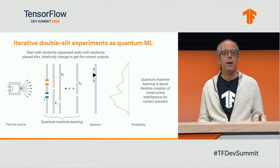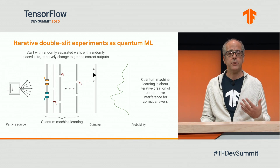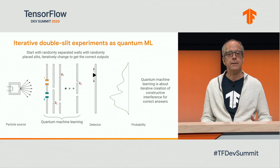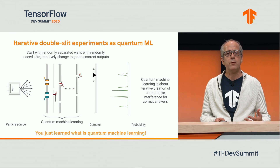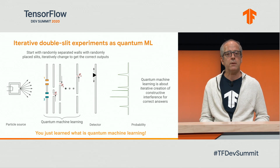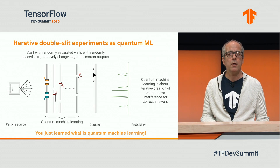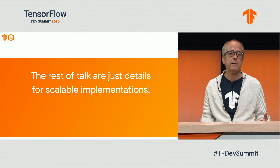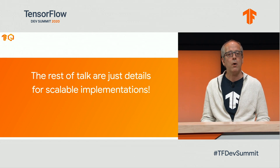We parameterize this arrangement, attributing parameters to each slit location, and iteratively learn to generate a desired output probability distribution or a set of solutions to a computational problem — that's the heart of quantum machine learning. This particular setting is not scalable, so the rest of the talk is about a scalable implementation and how we code it in TensorFlow.